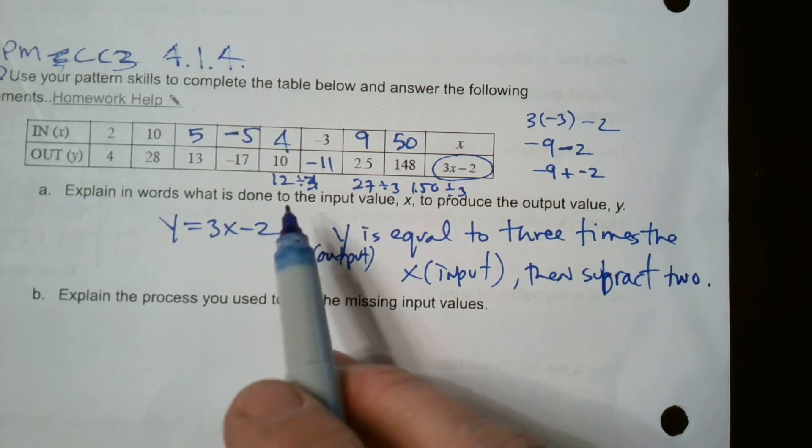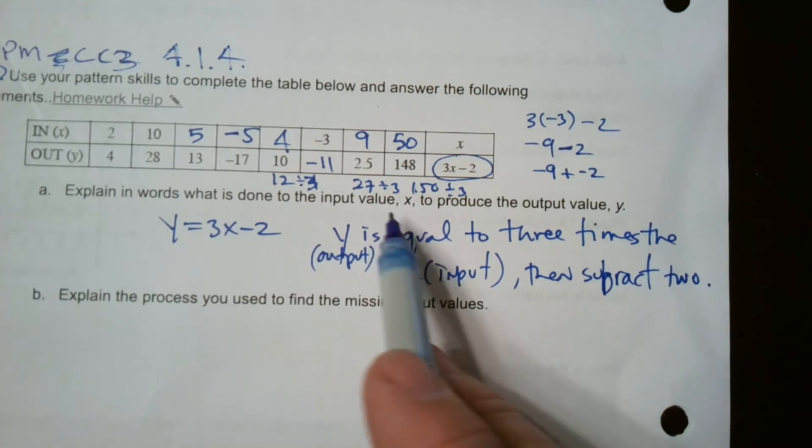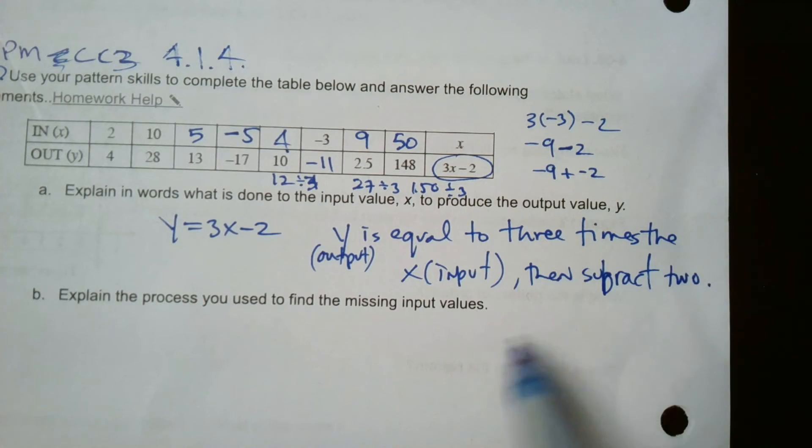Then subtract, three times the input. So Y is the output. I should also put that. Y is the output. So the output is equal to three times the X input, then subtract two. So there's my explain in words what is done to the X to produce the output Y. So the Y, the output, is equal to three times the X, the input, then subtract two.